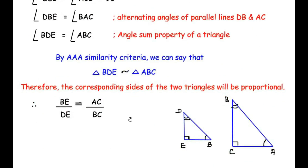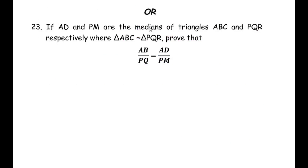Now let us move on to the OR question. AD and PM are the medians of triangles ABC and PQR respectively, where triangle ABC is similar to triangle PQR. We need to prove that AB over PQ is equal to AD over PM. Since no figure is given, we begin by drawing the two triangles ABC and PQR.